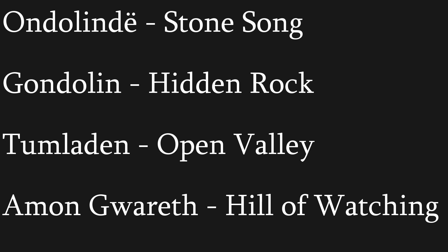Ondolindë is Quenya, a language the speaker unfortunately doesn't speak. Eventually Gondolin comes to be known as Gondolin, meaning hidden rock in Sindarin — the same root word seen in Gondor, which means land of stone or land of rock. From Gond, meaning rock or stone, and -dolin, meaning hidden. The city sits atop a hill called Amon Gwareth — the hill of watching — which sits in the centre of the plain of Tumladen, meaning the open valley.